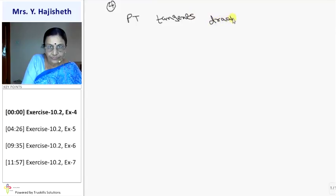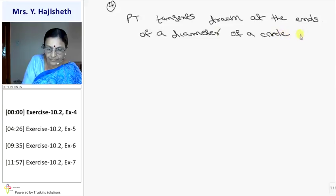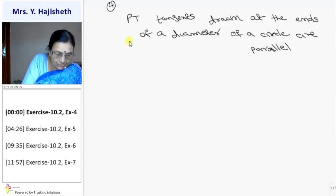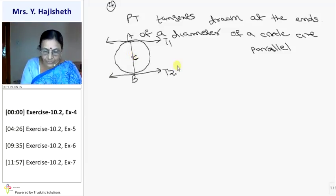Tangents drawn at the ends of a diameter of a circle are parallel. What I am asked to prove? Tangents drawn at the endpoints of the diameter are parallel. Let us draw the figure. This is a circle and I draw two tangents at the endpoints of diameter. Because AB is a diameter passing through center C. I want to prove that T1 is parallel to T2.